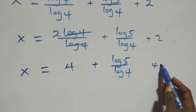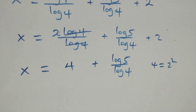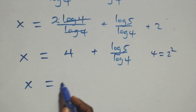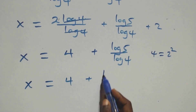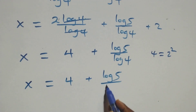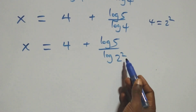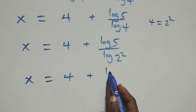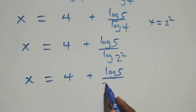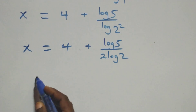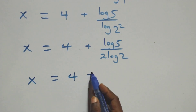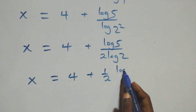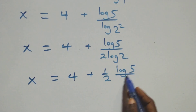We can write 4 as 2 squared. So x equals 4 plus log 5 over log(2 squared). We apply the power log rule again: the 2 comes down. So x equals 4 plus log 5 over 2·log 2. That is x equals 4 plus one half times log 5 over log 2.